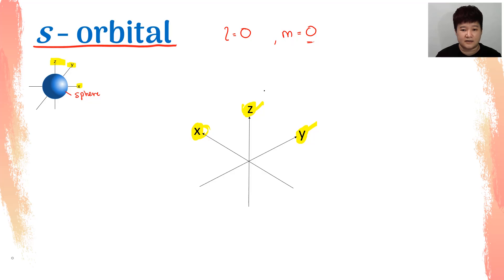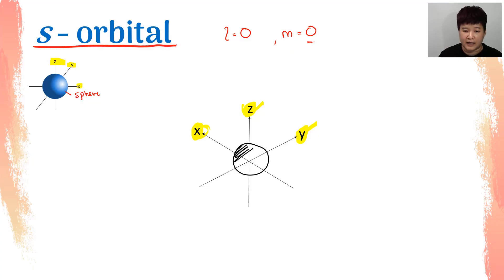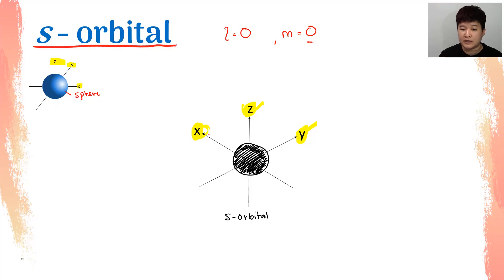The S orbital means it's a sphere, so you just simply draw a sphere around all the axes. You can shape them. And that is your S orbital that you can draw in your exam. Make sure you label them — there are two labels that you need to focus on: the axis and also the orbital that you are drawing.